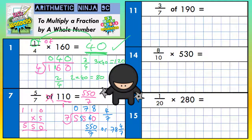Let's do the similar technique on question 11. So we're going to put the invisible 1 in, and we're going to go top times top, so 3 times 190, and bottom times bottom, 7 times 1. So let's work that out.